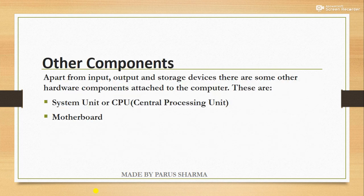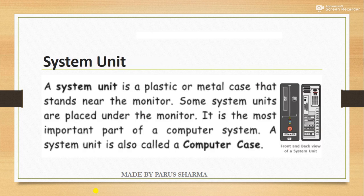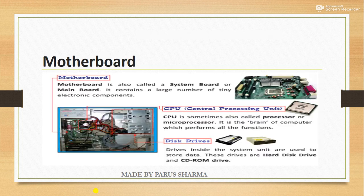Other components of computer hardware include the system unit or CPU and the motherboard. The system unit is a plastic or metal box or case that stands near the monitor and is an important part of the computer system, also called the computer case. The motherboard, also called the system board or main board, contains a large number of tiny electronic components, including the CPU and disk drives. The CPU, sometimes called a processor or microprocessor, is also called the brain of the computer, as it can perform all functions.